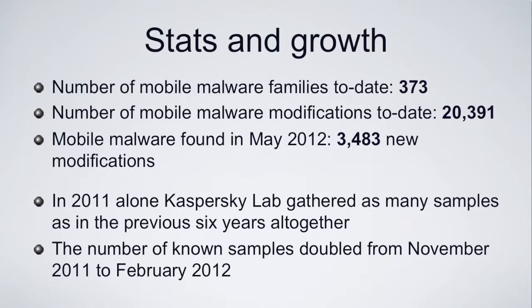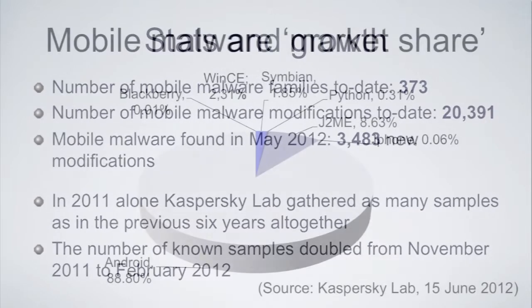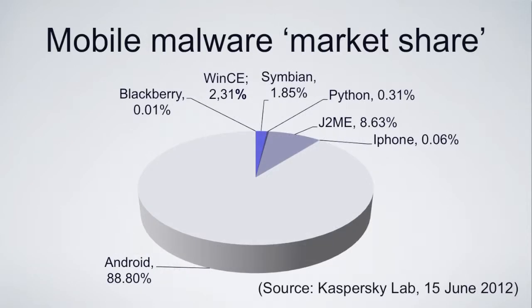The number of known samples from November of last year through to February of this year doubled — significant growth of this particular category of problem. In terms of the platform on which this growth is occurring, very demonstrably it's on the Android platform, because of the marketplace — the Google Play environment in which the code can be put — with a very different model of operation to, for example, Apple with iOS.